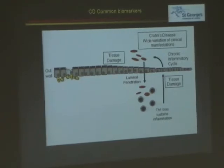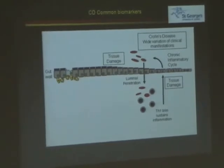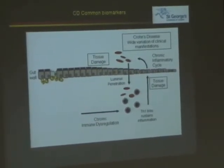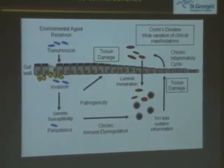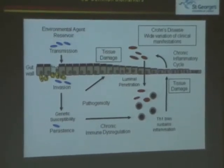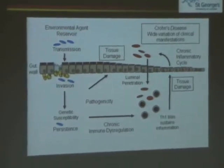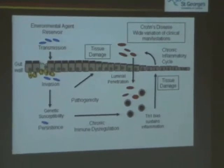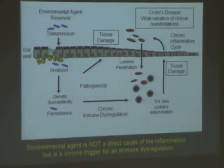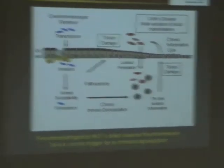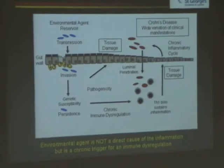We get this cycle of chronic inflammation that goes on. But underlying this — and this is the important bit — what is actually forcing this cycle to occur is in fact chronic immune dysregulation. And this chronic immune dysregulation is affected by other factors: genetic susceptibility, and the persistence of some sort of environmental agent that we know occurs because of the epidemiology of Crohn's disease. The environmental agent is not really a direct cause of the inflammation — it is just a chronic trigger of the immune dysregulation, and this is the pathway we should be looking at in our studies.